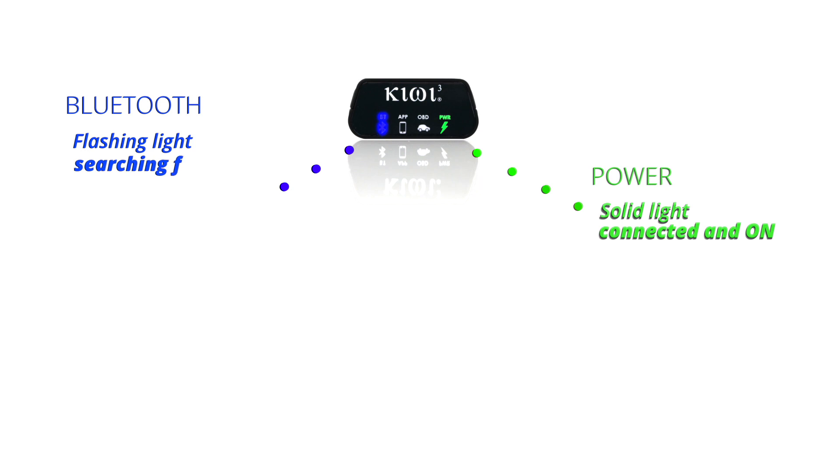The power icon will be solid when the Kiwi 3 is properly connected to your OBD port. The Bluetooth icon will flash, indicating it's searching for your smartphone. It will turn solid once a Bluetooth connection is established.